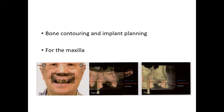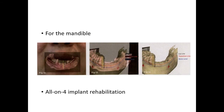For the maxilla, to achieve the correct transition zone height, bone needed to be reduced in height. The blue line in Figure 11 indicates the bone level was around 13 mm from the inferior edge of tooth number 8. For the mandible, to achieve the correct transition zone height, bone needed to be reduced to approximately 18 mm from the inferior edge of tooth number 27. Maxillary and mandibular all-on-four implant rehabilitation was enabled via adequate restorative space in this patient.